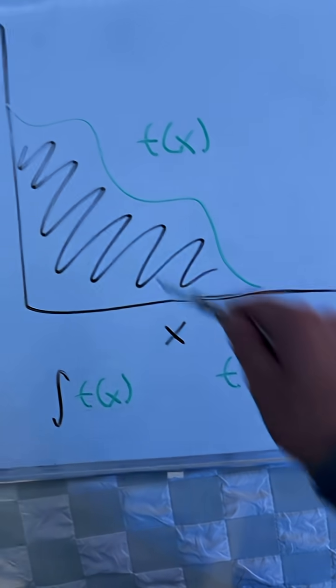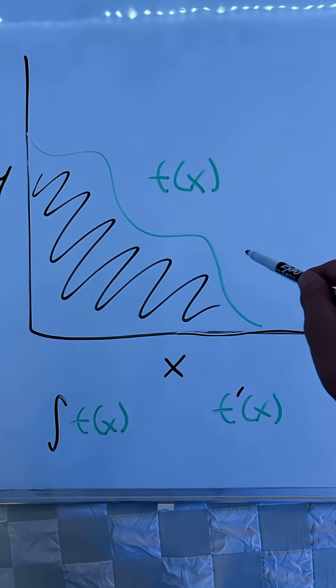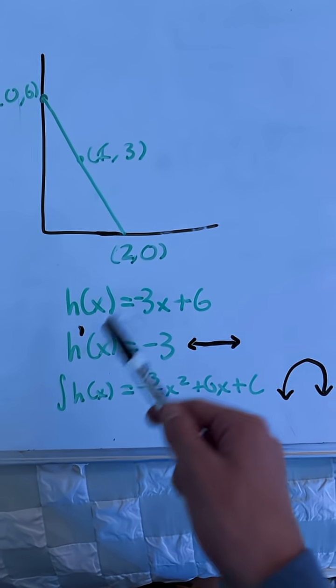The integral is the opposite of the derivative, which finds the slope of the function at all points. For example, if you're finding the derivative of a line, it's going to be the slope of the line at all points, which is going to be a horizontal line, since the line is constant.